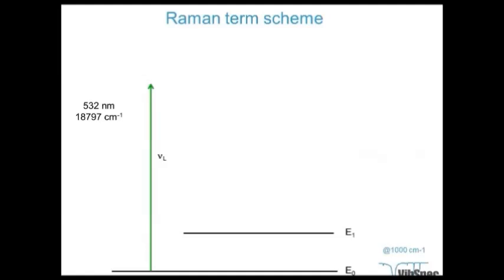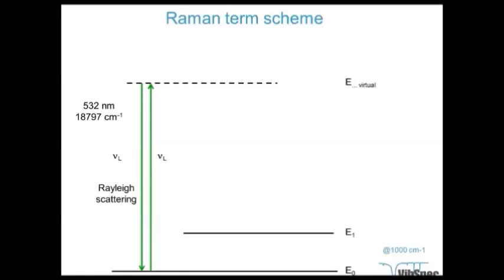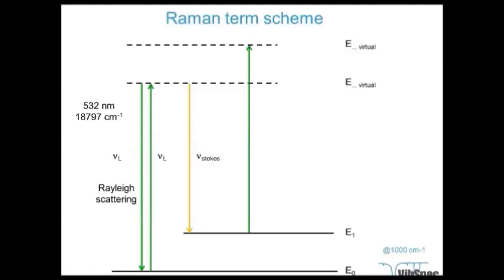In a Raman energy level scheme, using a 532 nanometer laser corresponding to almost 19,000 wavenumbers, we excite molecules to a virtual level. If they fall back to the ground state, we have Rayleigh scattering — no energy transferred. Sometimes energy is lost, giving a slightly longer wavelength: this is Stokes radiation. In some cases, molecules already in the first vibrational excited state can fall back to the ground state, gaining energy — this is anti-Stokes radiation. Anti-Stokes is much less likely, so Stokes radiation is what we normally observe.